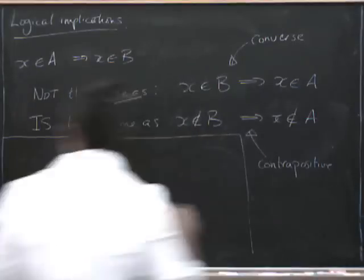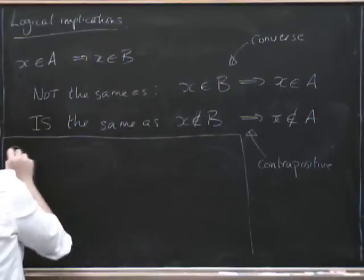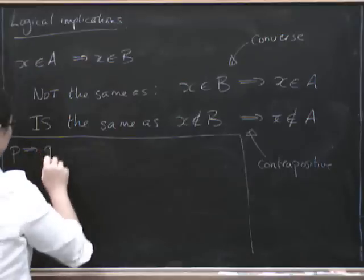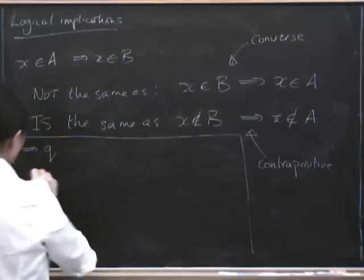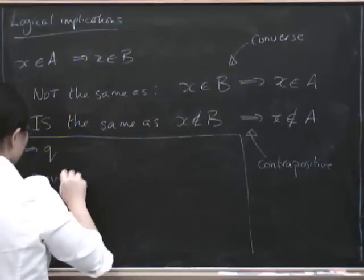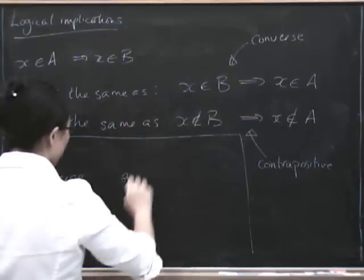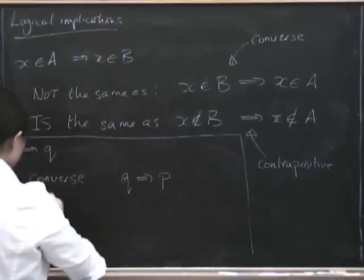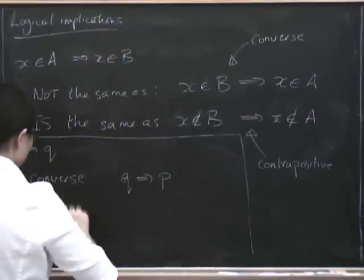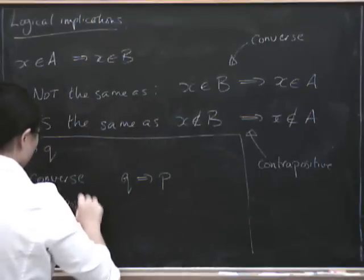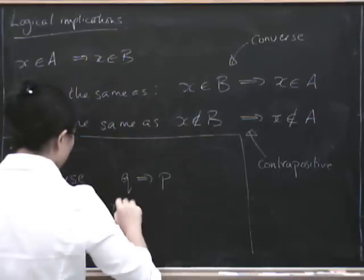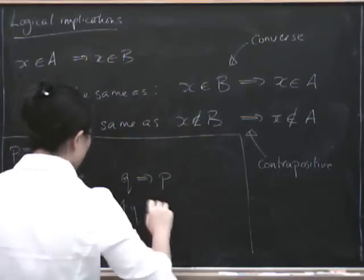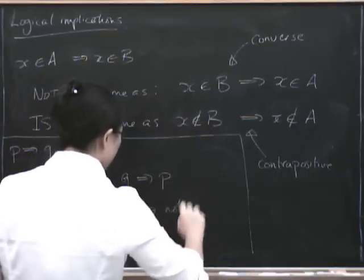If we start with a statement P implies Q, then the converse is Q implies P. The contrapositive is not Q implies not P.